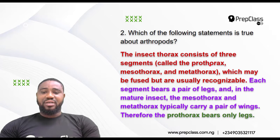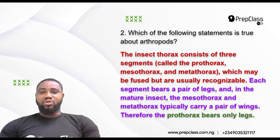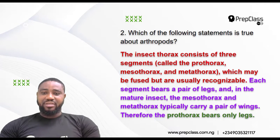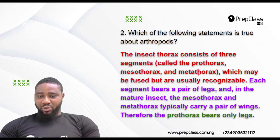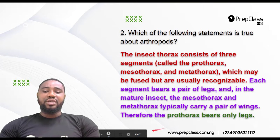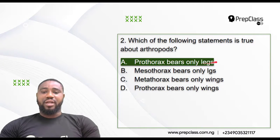So just like I said, the prothorax, mesothorax, and metathorax all bear walking legs. The insect has six legs — the first two pairs using the prothorax, the second two pairs the mesothorax, the last two pairs the metathorax. But the wings are attached between the mesothorax and the metathorax. So the prothorax bears only legs. The correct answer is: the prothorax bears only legs.